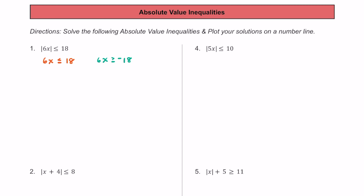Once we have our two different inequality statements, we just want to isolate x. On the left, we can divide both sides by 6. If we do so, we get x is less than or equal to 3 for our first boundary. And then for our second one, if we divide by 6 on both sides, we end up with x is greater than or equal to negative 3.